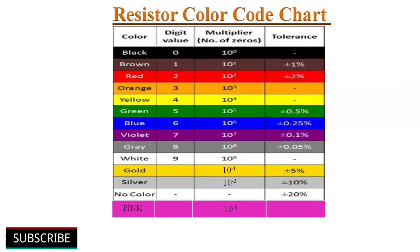Here is the resistor color code chart, which shows different colors like black, brown, red, and so on, along with their respective digit values, multiplying factor, and tolerance values in a sequence.